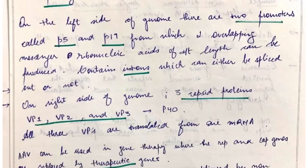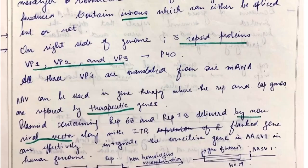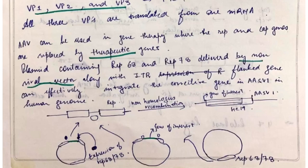The ITR basically helps in converting single strands to double-stranded DNA. On the left side of genome there are two promoters called P5 and P19 from which two overlapping messenger ribonucleic acids of different lengths can be produced. On the right side of genome, three capsid proteins that is VP1, VP2, and VP3, altogether P40 is present.